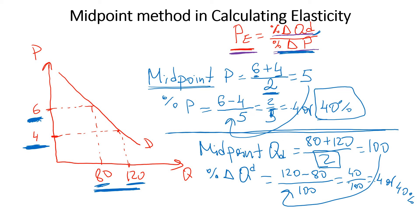The percentage change in price was 40% and the percentage change in quantity demanded was also 40%. Now we plug these two numbers into our formula. So elasticity, or price elasticity of this demand curve, equals exactly 1. We'll learn in the next video that this is unit elastic, where price and quantity changed in the same proportion.